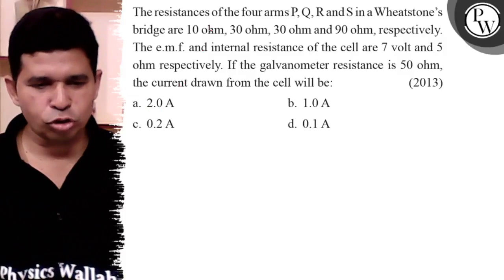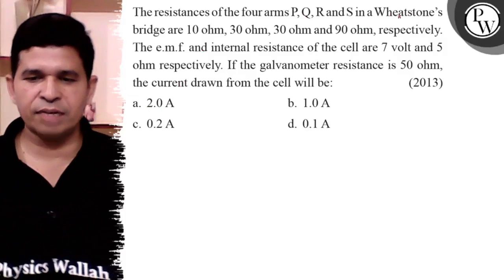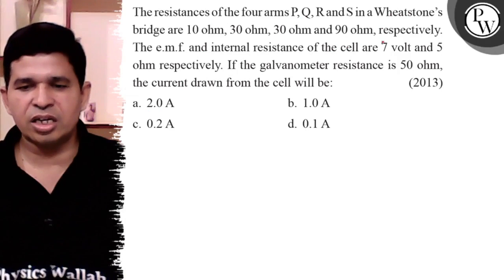Hello Bacho, let us see this question. The resistances of the four arms P, Q, R, and S in a Wheatstone bridge are 10 ohm, 30 ohm, 30 ohm, and 90 ohm respectively.